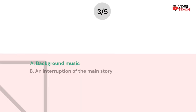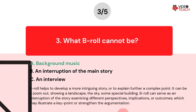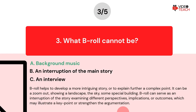The correct answer is A. B-Roll helps to develop a more intriguing story or to explain further a complex point. It can be a zoom out showing a landscape, the sky, or some special building, or it can be a zoom in focusing on a specific detail, be it natural or human made. B-Roll can serve as an interruption of the story examining different perspectives, implications, or outcomes, which may illustrate a key point or strengthen the argumentation.